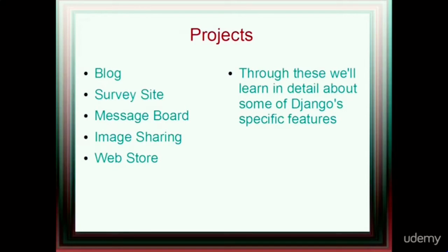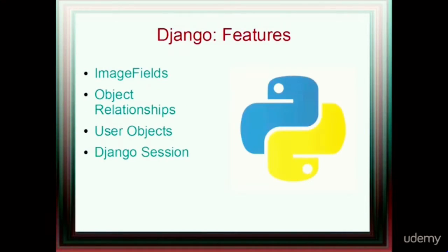Through looking at each of these, we'll take a look at some individual features of Django. Across the five projects, we're going to look at image fields — a way to upload images and store them as part of our Django application. We'll also look at more complex object relationships, like many-to-many fields and one-to-many fields, and how to set these up in Django and access the individual objects we'll be creating.